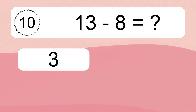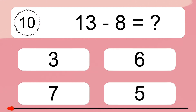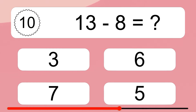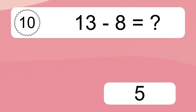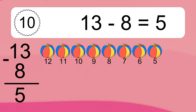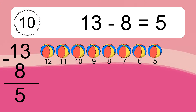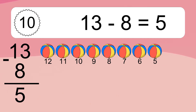13 minus 8 equals what? 13 minus 8 equals 5. Let's count it: 12, 11, 10, 9, 8, 7, 6, 5.